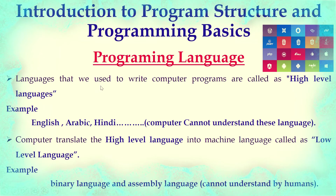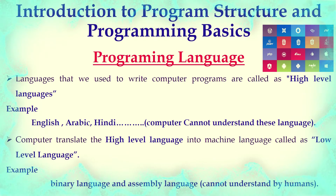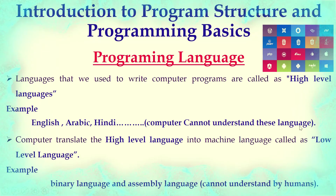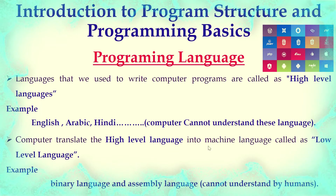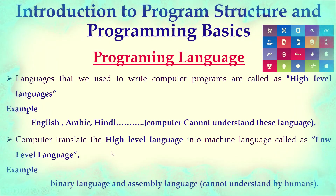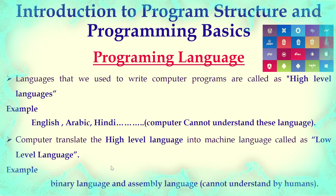The languages we use to write programs are called high-level languages. We can use languages like C++, Java, or Python to give instructions or write a program, and these languages are understood by the computer. The computer then translates the high-level language into machine code, called low-level language. Since the computer cannot directly understand high-level language, it must be converted into low-level language that the computer can understand.